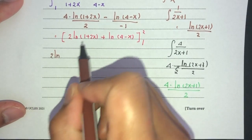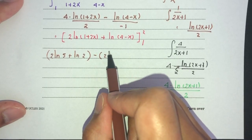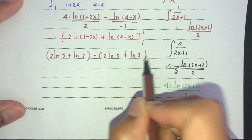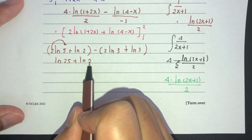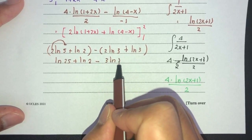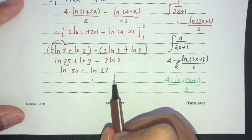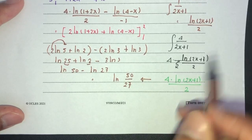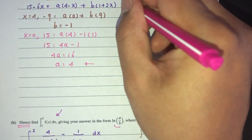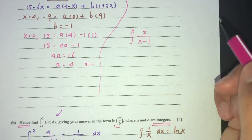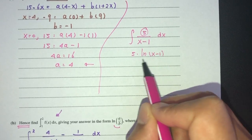Substituting the limits 2 and 1: at x = 2: 2·ln(5) + ln(2); at x = 1: 2·ln(3) + ln(3) = 3·ln(3). So the result is [2·ln(5) + ln(2)] − 3·ln(3) = ln(25) + ln(2) − ln(27) = ln(50) − ln(27) = ln(50/27). This is the exact answer with a and b as integers.